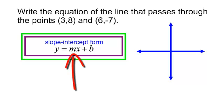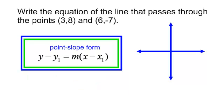We can use the slope-intercept form. I need the slope, the little m, and I need the y-intercept. Or I can use the point-slope form, y minus y sub 1 equals the slope times in parentheses x minus x sub 1.